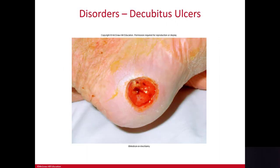A decubitus ulcer is the medical term for a pressure ulcer, commonly called a bed sore. The term comes from the prefix 'de' meaning from and 'cubitus' meaning lying down. These wounds result from lying in one position for long periods of time, where pressure from the bed surface and bony prominences — like the lower spine and heels — cuts off the blood supply to the skin. The tissue starts to die from lack of oxygen and the protective barrier of the skin breaks down.